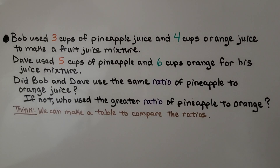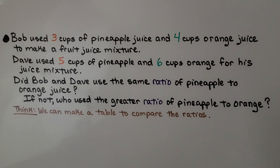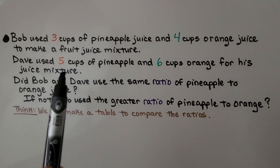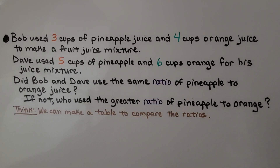Bob used 3 cups of pineapple juice and 4 cups of orange juice to make a fruit juice mixture. Dave used 5 cups of pineapple and 6 cups of orange for his juice mixture. Did Bob and Dave use the same ratio of pineapple to orange juice? And if not, who used the greater ratio of pineapple to orange? Bob's ratio is 3 pineapple to 4 orange, and Dave's is 5 pineapple to 6 orange.